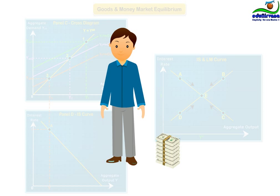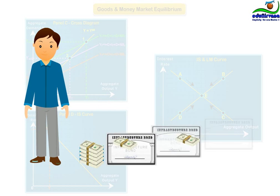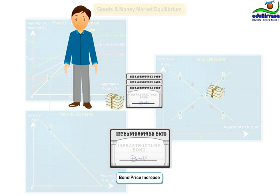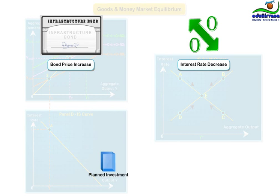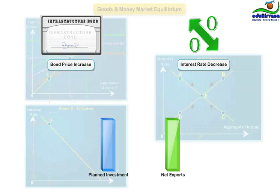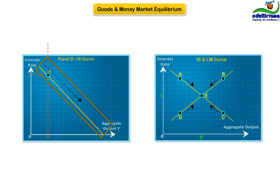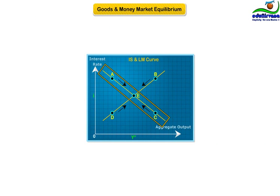they will try to get rid of it by buying bonds. The resulting rise in bond prices causes a fall in interest rate, which in turn causes both plant investment spending and net exports to rise and thus aggregate output rises. The economy then moves down along the IS curve and the process continues until the interest rate falls to I and aggregate output rises to Y,